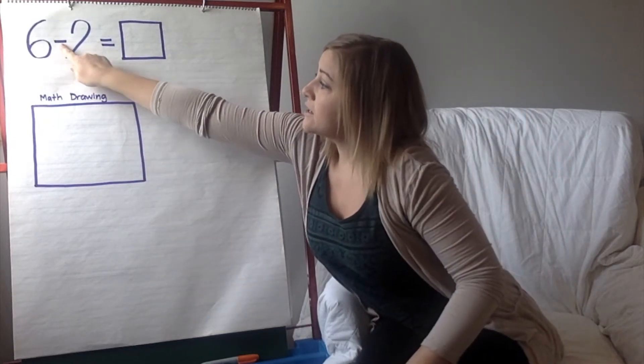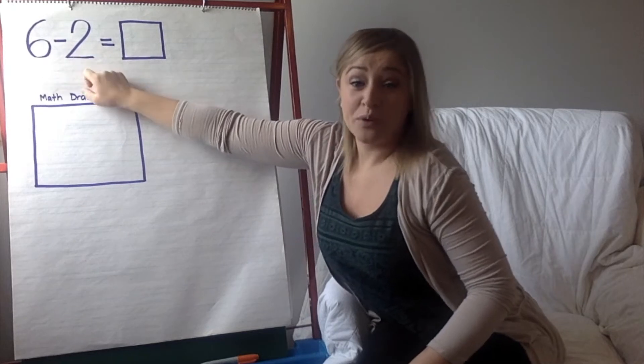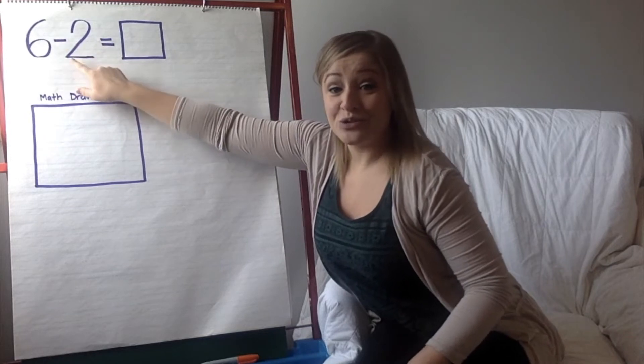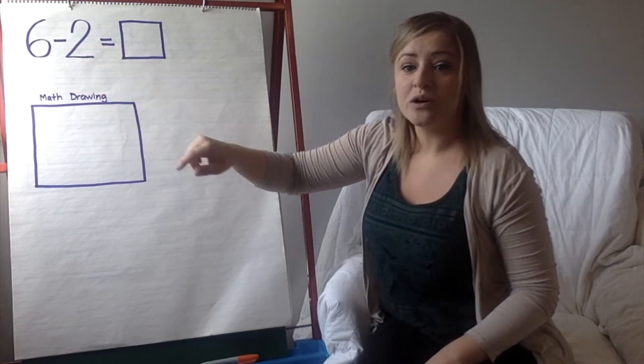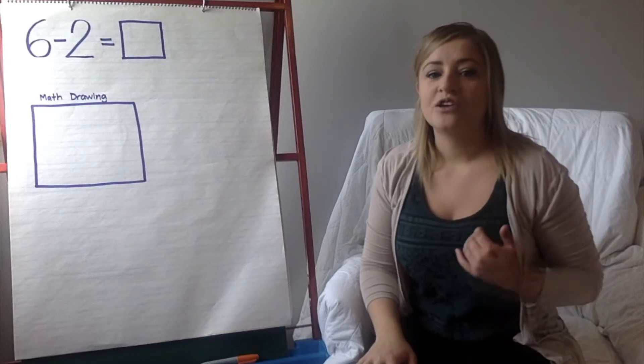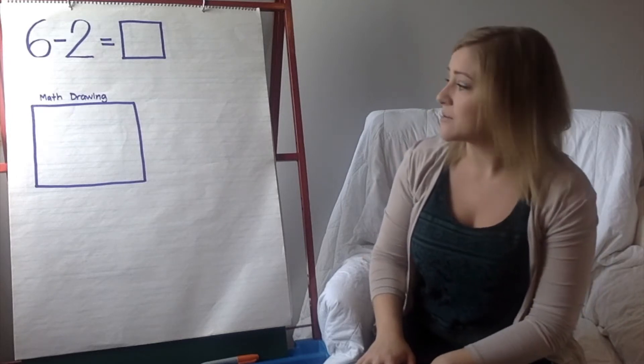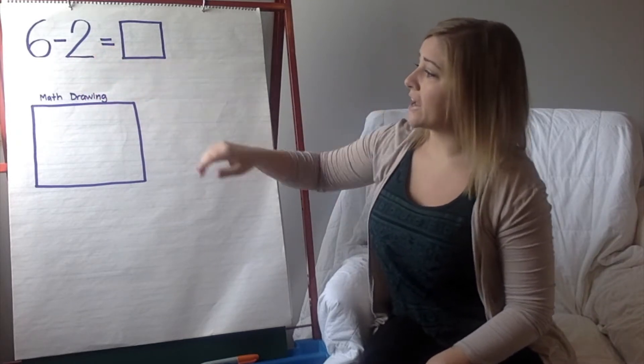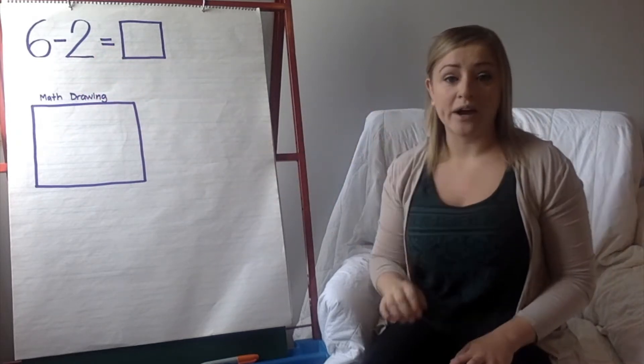When you see 6-2, it's really saying 6 subtract 2, 6 minus 2, 6 take away 2. So, that dash mark represents that you're taking away, you're subtracting, or minusing something. So, we have 6 minus 2 equals blank. We need to figure out our answer.